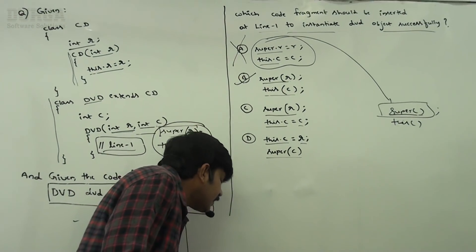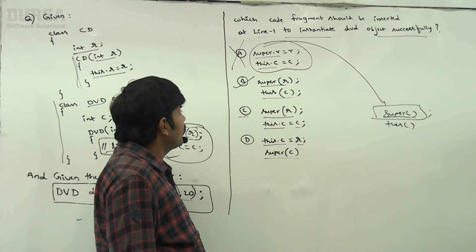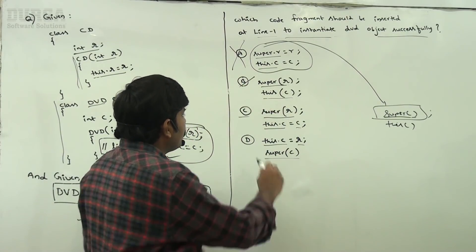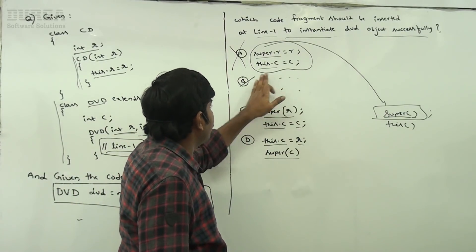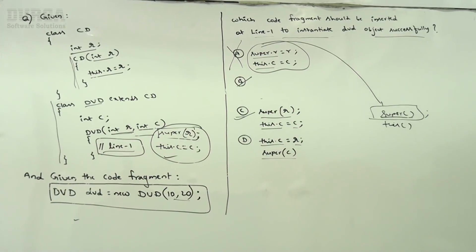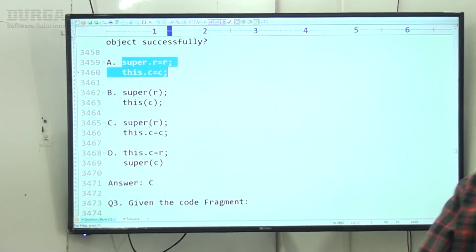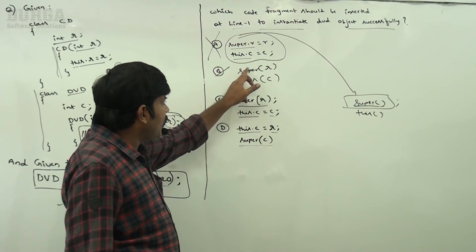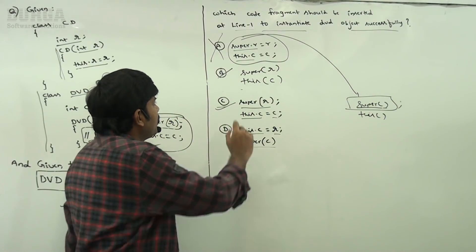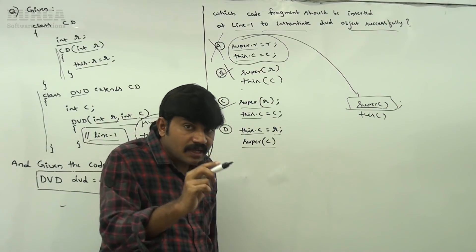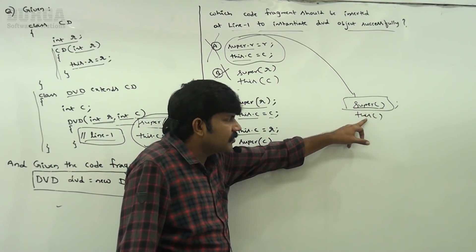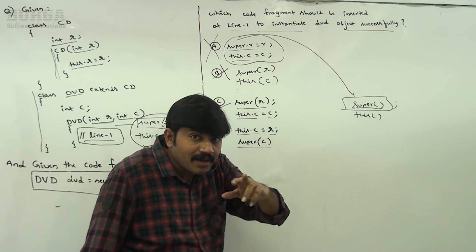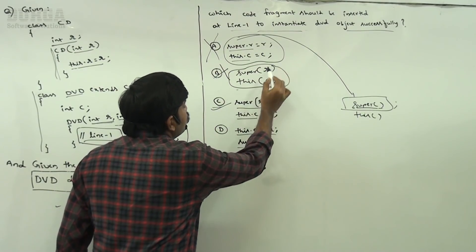The second option — super(R) or this(C) — is invalid. The first line inside every constructor should be either super or this, but we can't take both simultaneously. We have to take either super or this, but not both simultaneously. Here, you are taking both simultaneously, which is invalid — we are going to get a compile-time error.